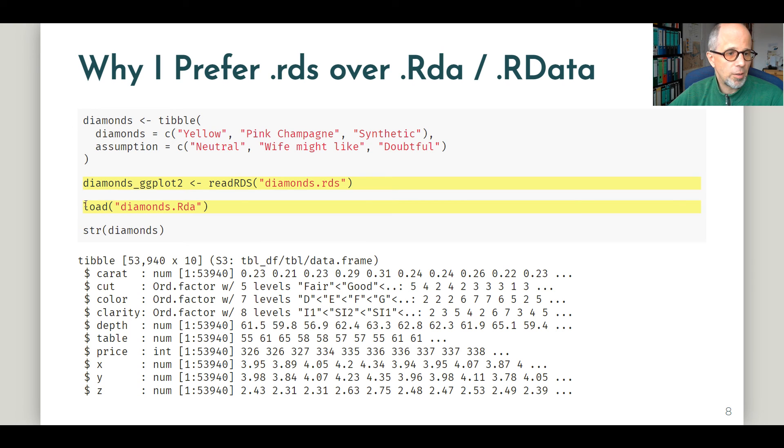This is not true for the .rda format. Note that the function here is just to load the object. There's no assignment so I can't specify an object name. And in this case, it goes wrong because the diamonds dataset is stored as the object diamonds and without a warning, it overwrites the object in my global environment, my own diamonds dataset. That is lost in this moment. No warning, no safety net. And this is really a danger with the .rda format.